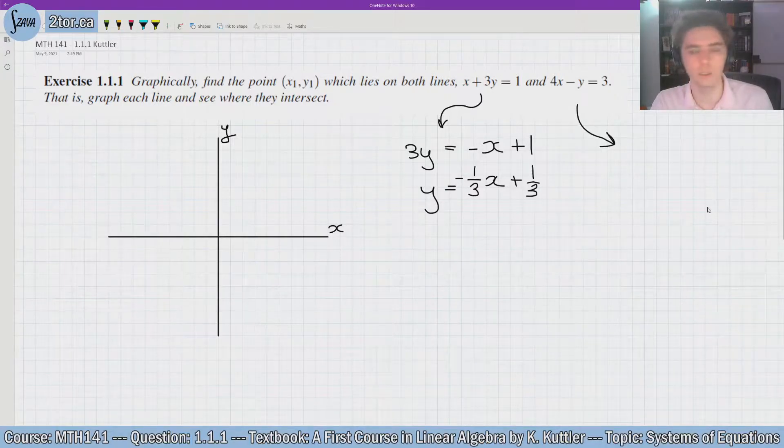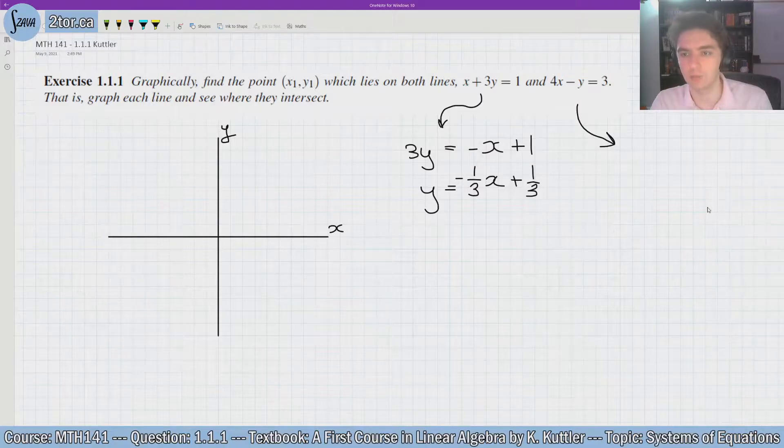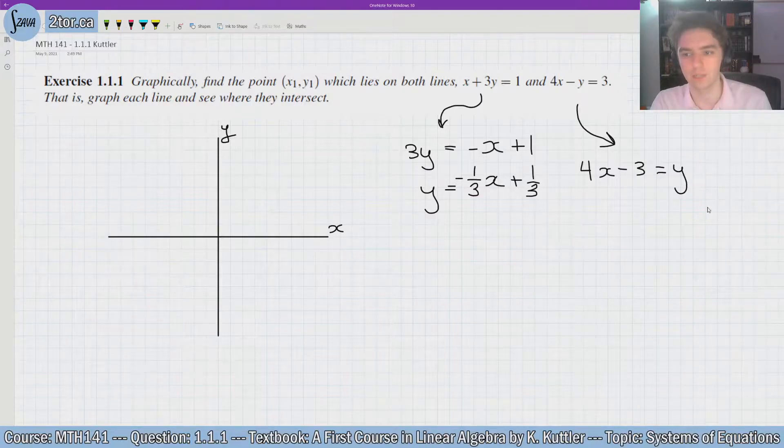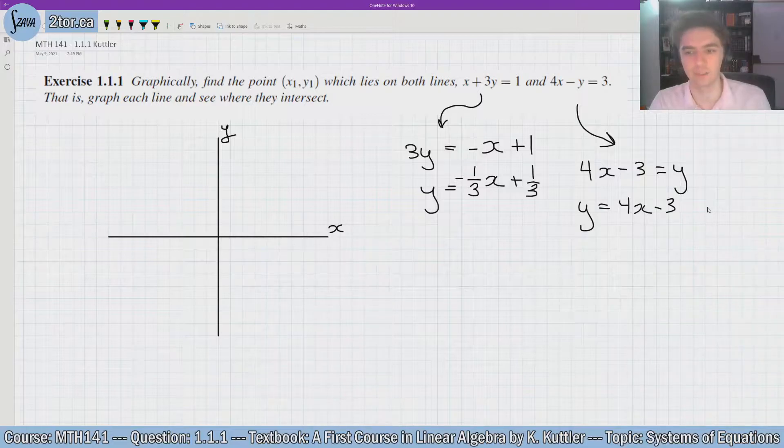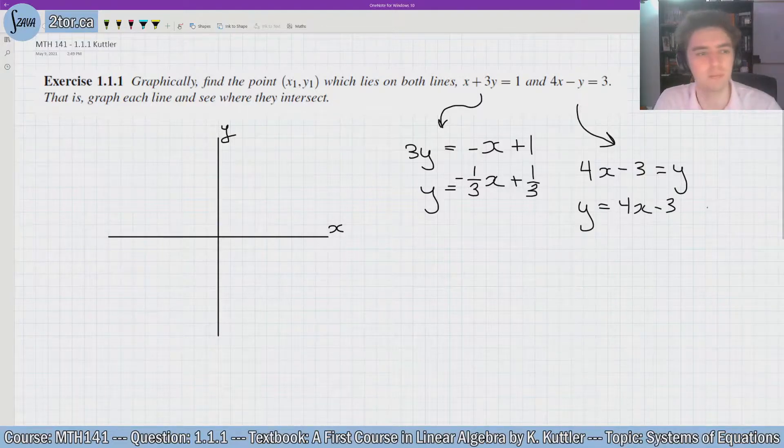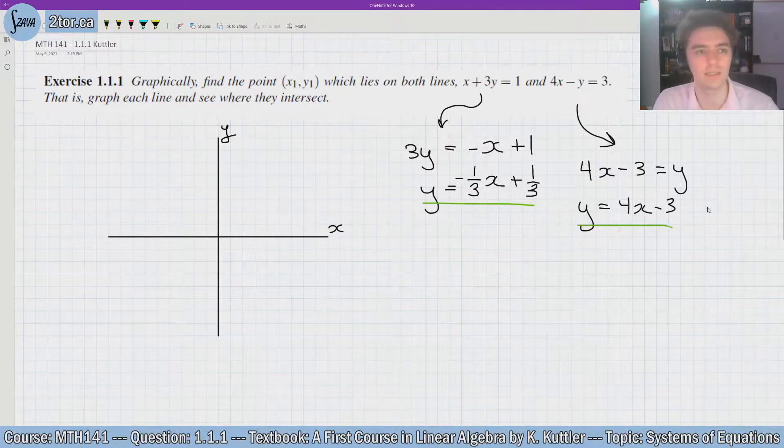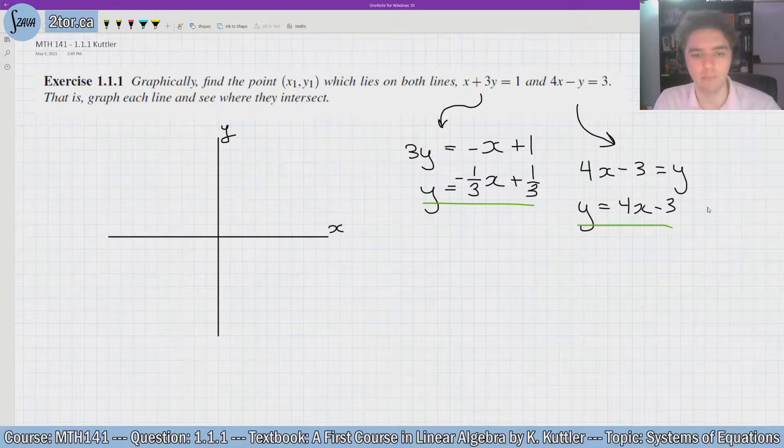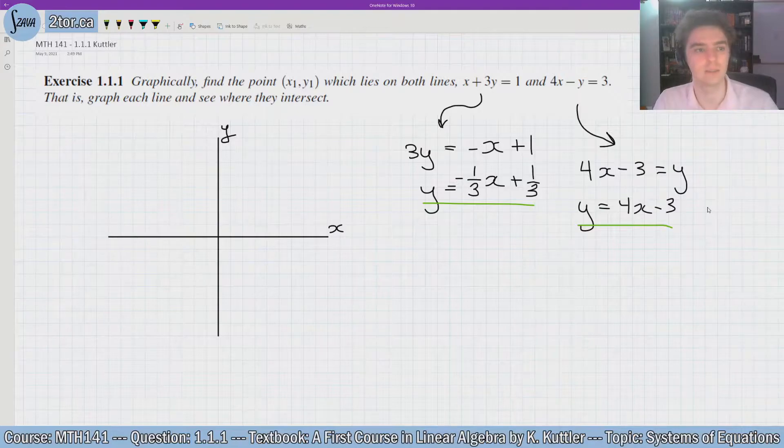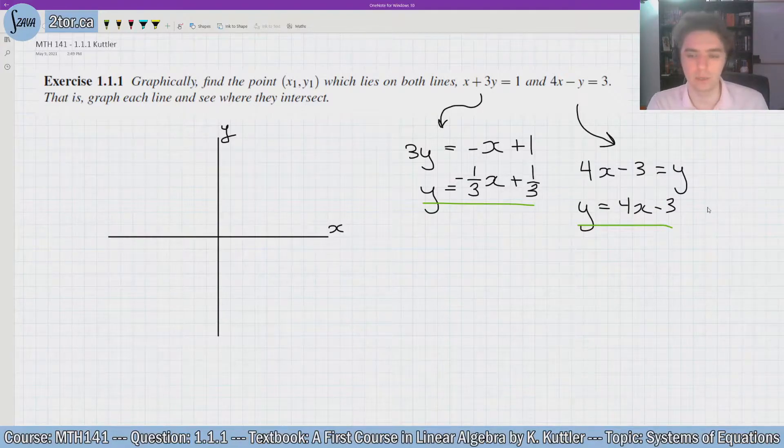Now let's take a look at the next one here. So we have, I just moved the y over and the 3 to the other side, so that's going to be 4x - 3 = y, which is essentially y = 4x - 3. Okay, so we have both things in slope-intercept form now. There's our first one, there's our second one, those are two lines. And so we're going to graph both these lines and see where they intersect. And that will be the point (x₁, y₁) which lies on both lines, right, the point which is on both lines at the same time.